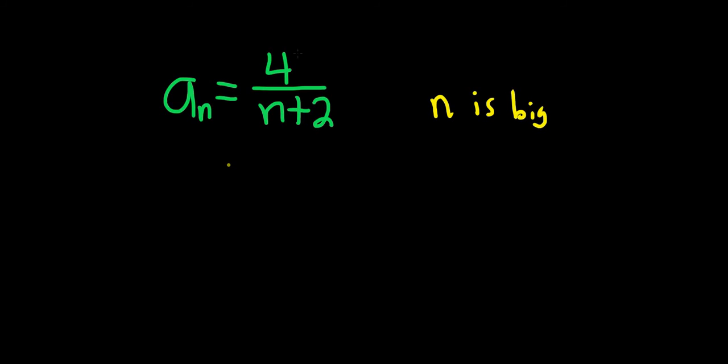So if you look at the numerator, the numerator is just 4, so it's always going to be 4 no matter what. On the denominator, it's n plus 2, and n is getting big. So if n gets big,